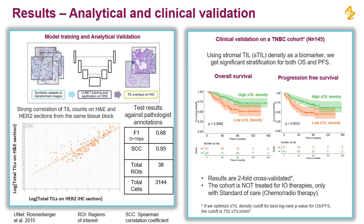For this application, a U-Net model was trained only on synthetic IHC patches obtained from H&E patches via domain adaptation. To analytically validate our approach, we performed two steps. Firstly, we compared the TIL densities on consecutive IHC and H&E sections from the same tissue block. The graph on the left hand side shows strong correlation of TIL counts between the IHC and the H&E section.